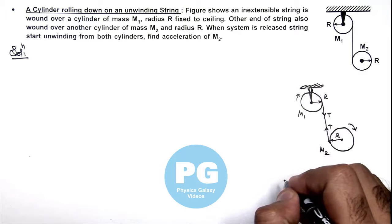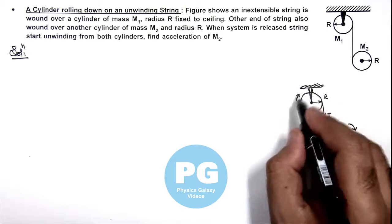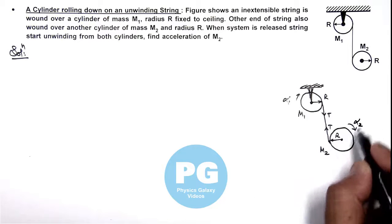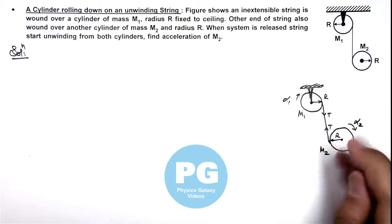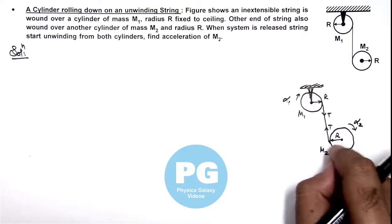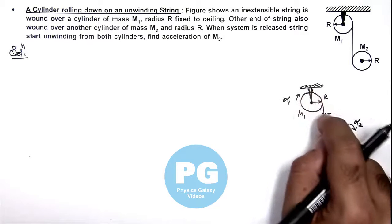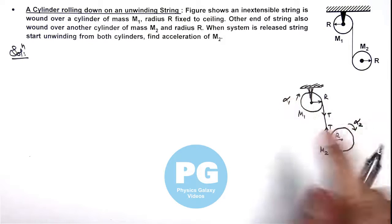In this situation, if it is rotating at angular acceleration alpha 1, this will be at angular acceleration alpha 2. So this will unwind with linear acceleration R alpha 2, and this will unwind the string at linear acceleration R alpha 1.